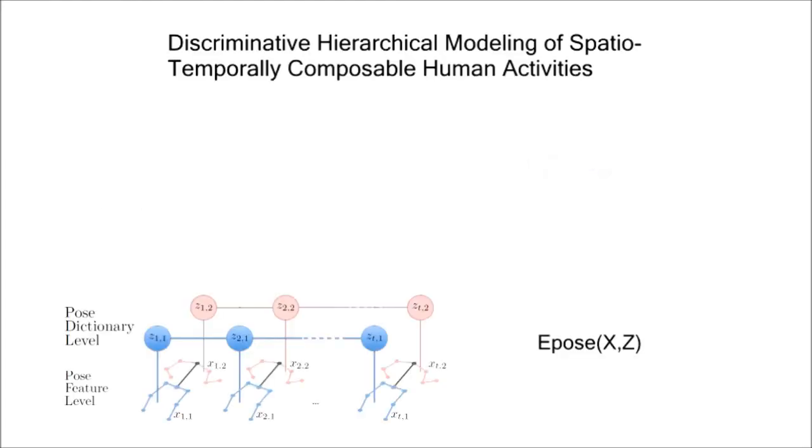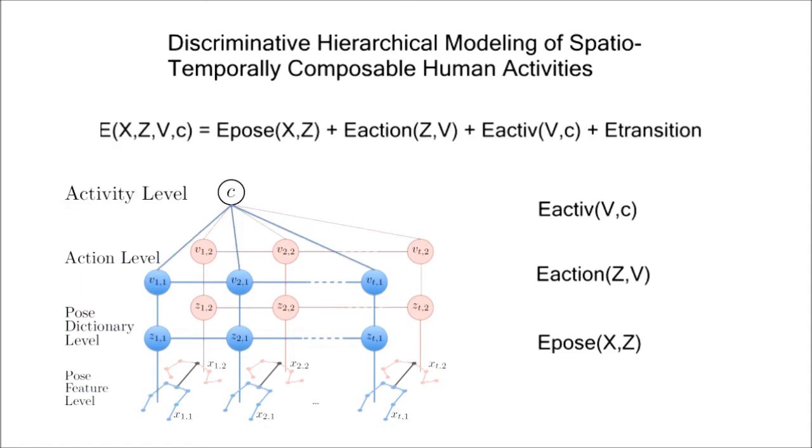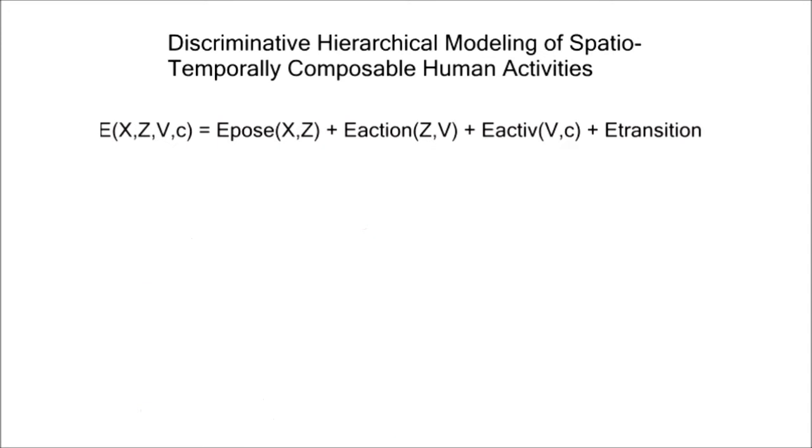In our paper, we propose a hierarchical model for recognizing complex human activities in videos using three semantic levels. The model is formulated in a Max-Margin framework, jointly learning pose, action, and activity classifiers.